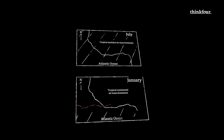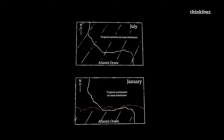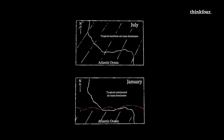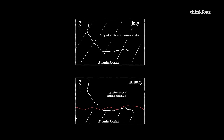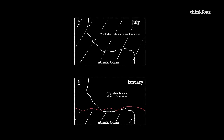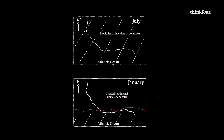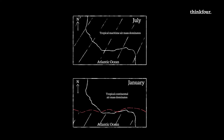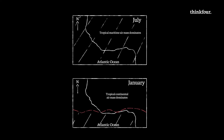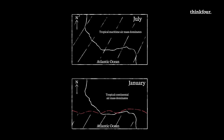By July, the ITCZ has migrated northwards and sits over the Tropic of Cancer. It has pulled with it the tropical maritime air mass, bringing the wet season to most of West Africa. By January, it has moved southwards and sits over the coast of West Africa, having pulled with it the tropical continental air mass, bringing the drier season to the region.